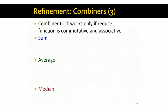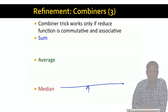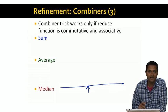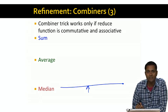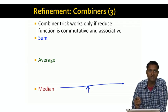Unfortunately, while most functions are amenable to the combiner trick, there are some functions that don't work with the combiner trick at all. One example is median. The median of a set of values is obtained by sorting the set of values and finding the middle value in that sorted list. It can be proved mathematically that there is no way to split the median computation into a bunch of commutative and associative computations. So you can't use the combiner trick if your goal is to compute the median — you just have to ship all the values to the reducer and compute the median there.